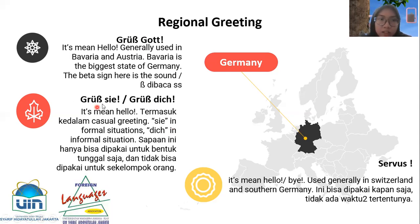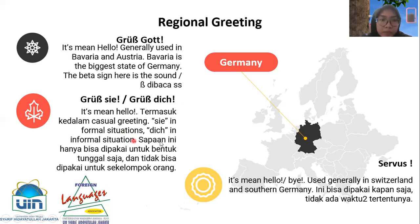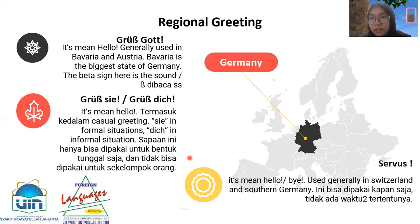Next, 'Grüß Sie' or 'Grüß Dich' also means 'hello' and is a casual greeting. The letter C in 'Sie' is pronounced like Z, and 'Dich' has an SH sound — 'dich'. 'Grüß Sie' is used for formal situations while 'Grüß Dich' is for informal situations. This greeting can only be used in a one-on-one conversation, not for a group of people.